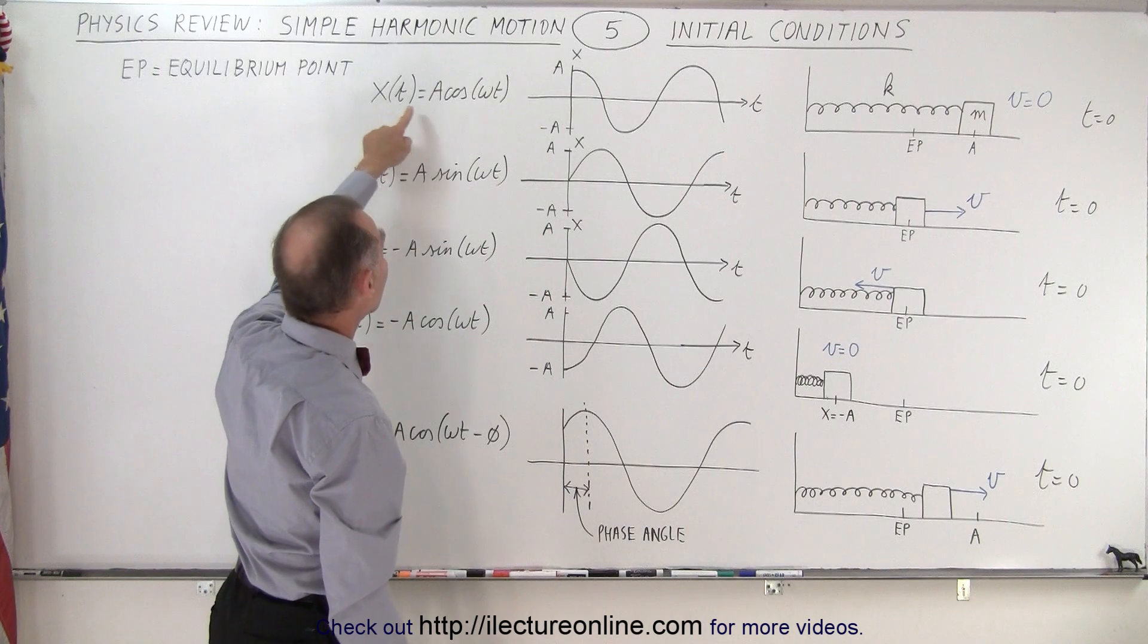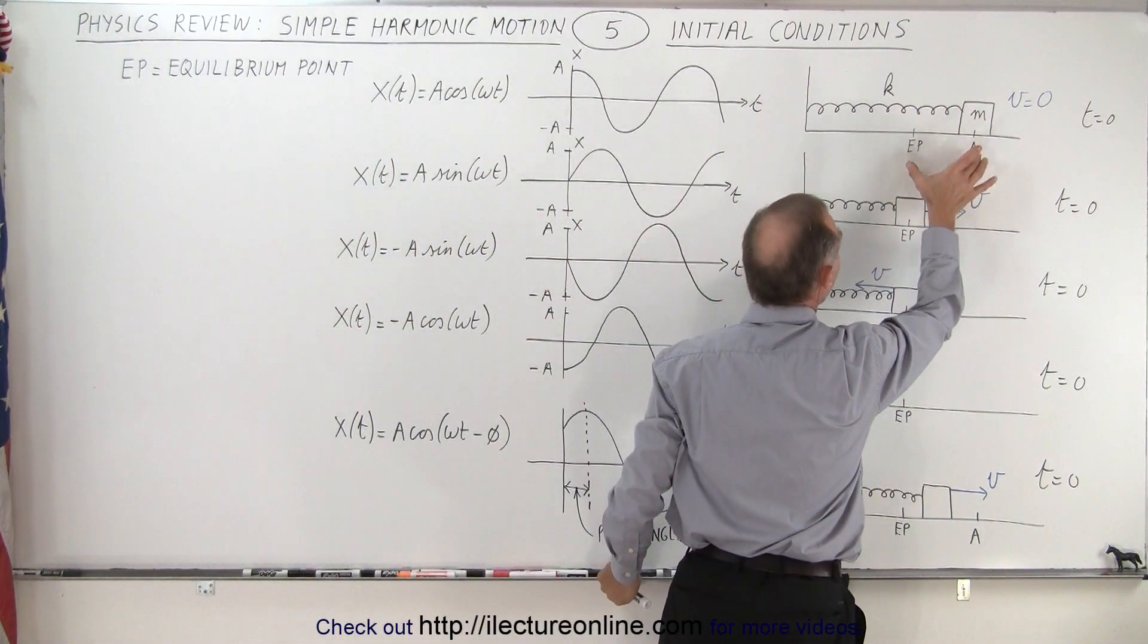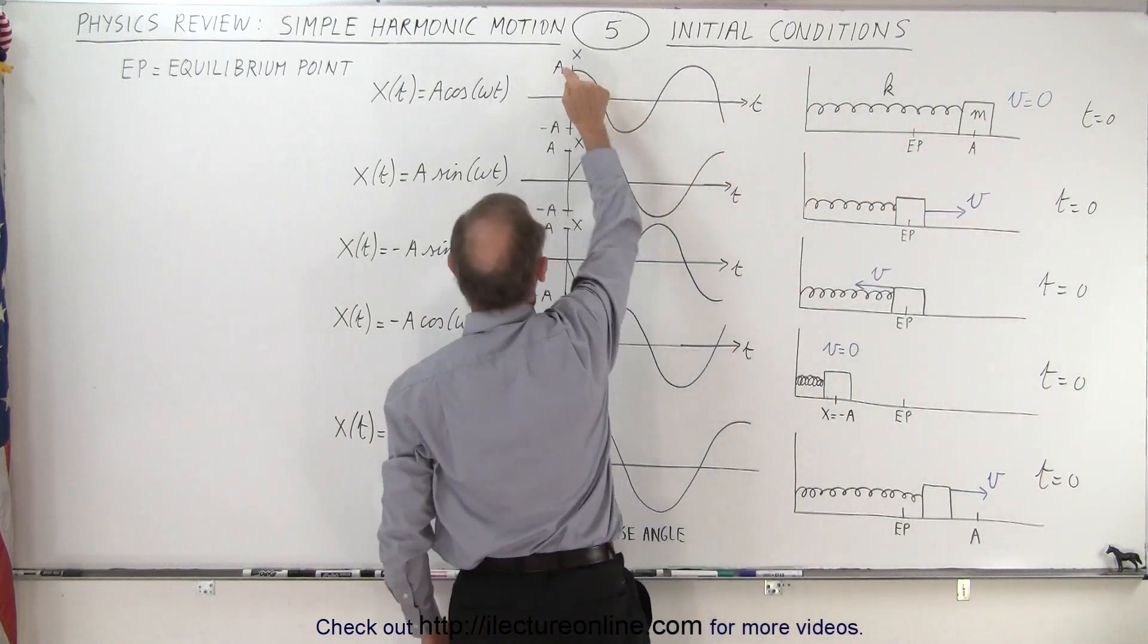So the first equation you use is A times the cosine of omega t, because when time equals zero, x is at its maximum value.